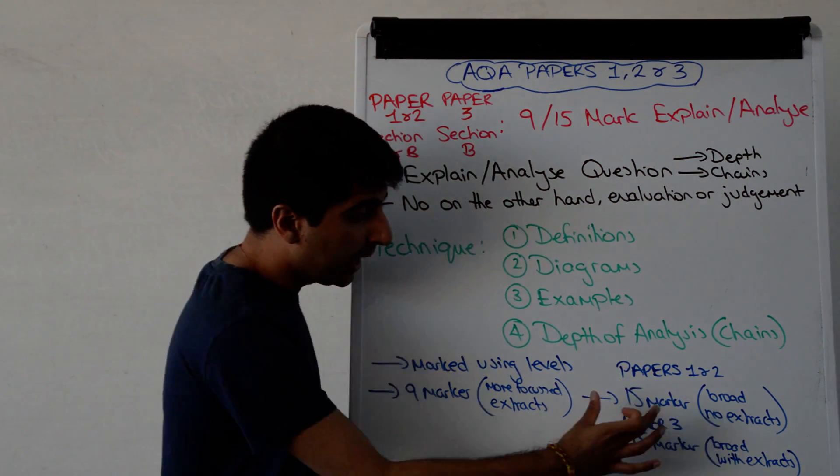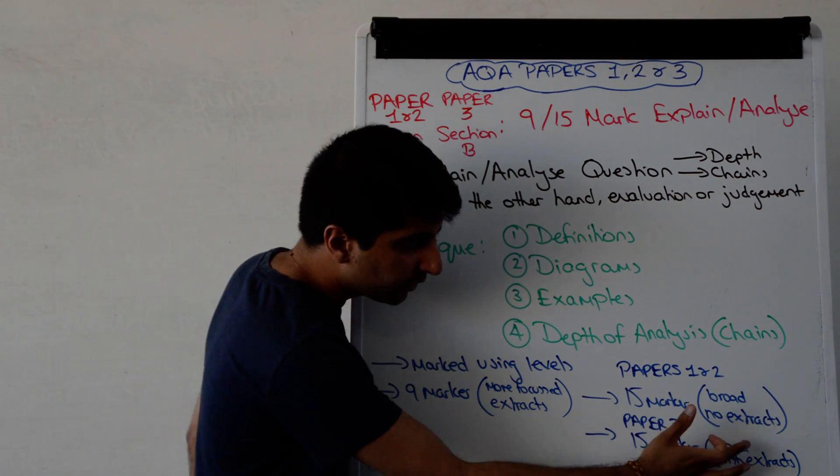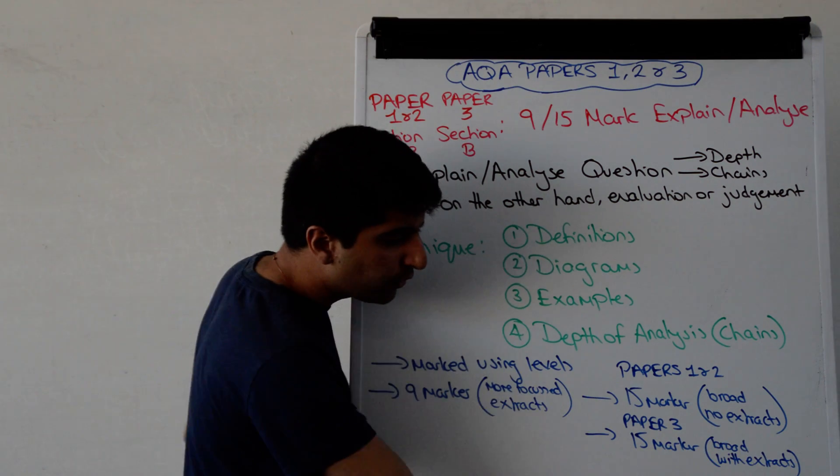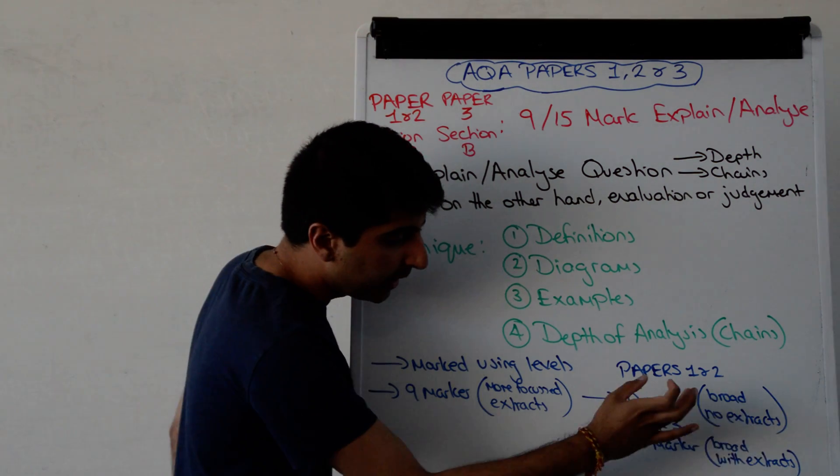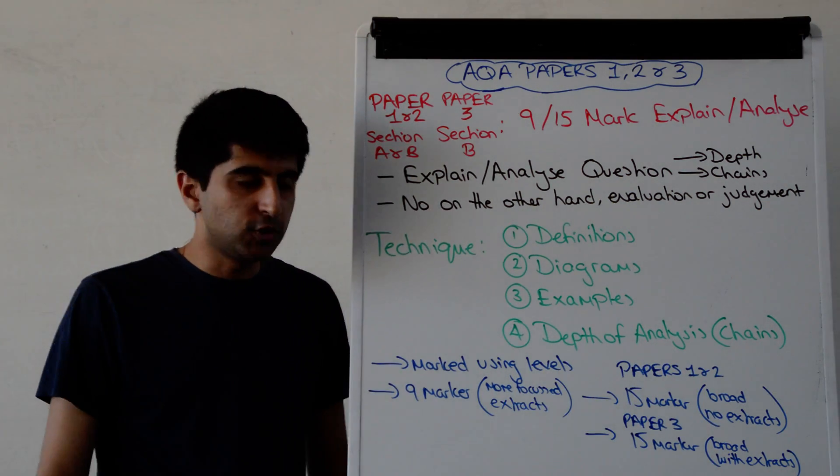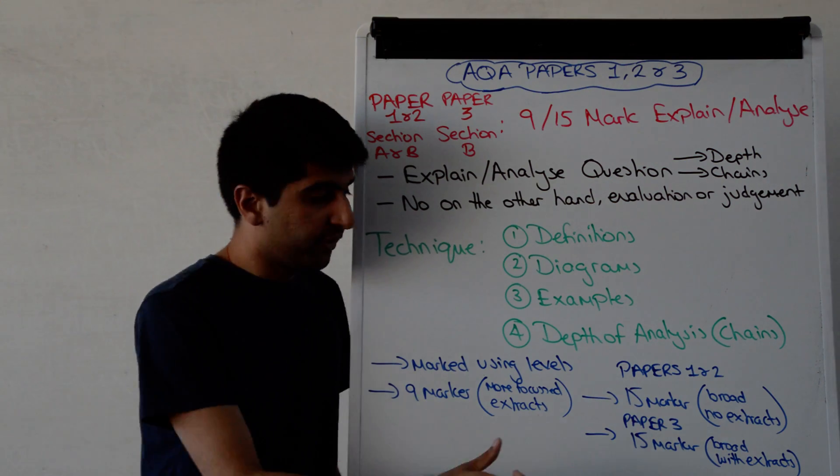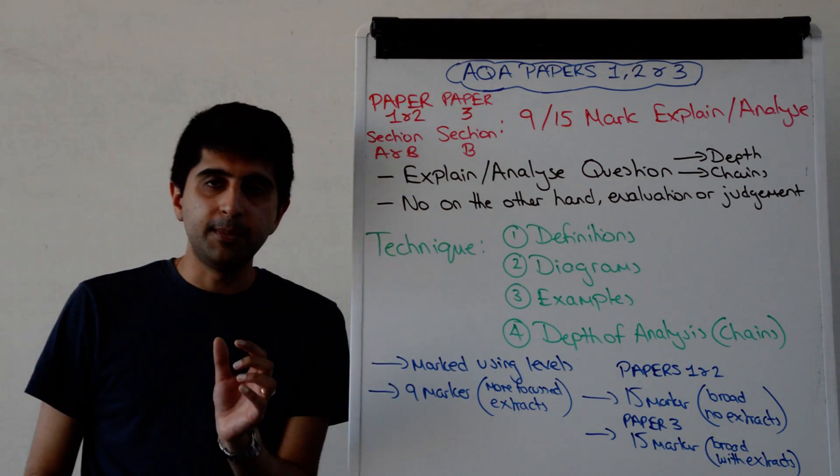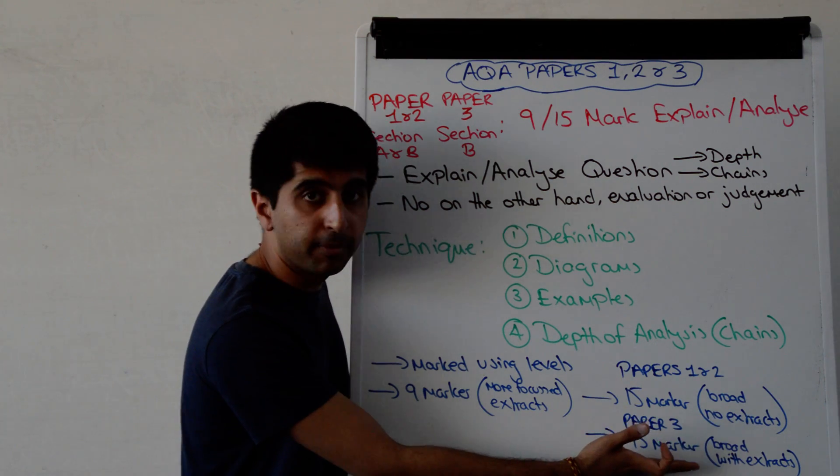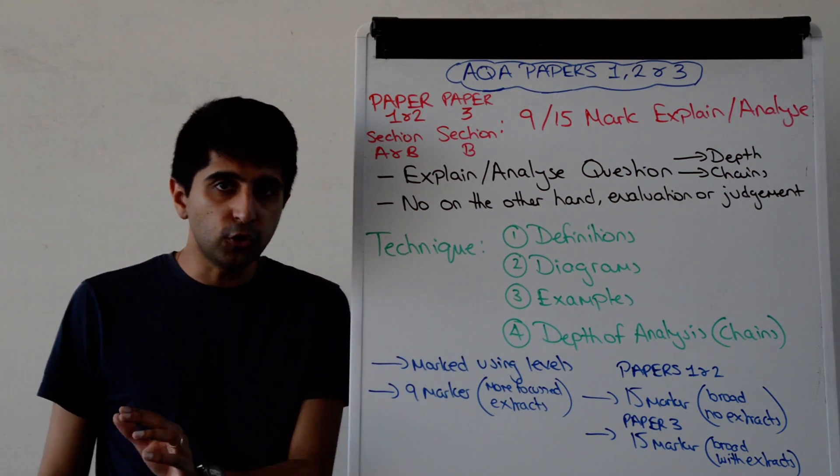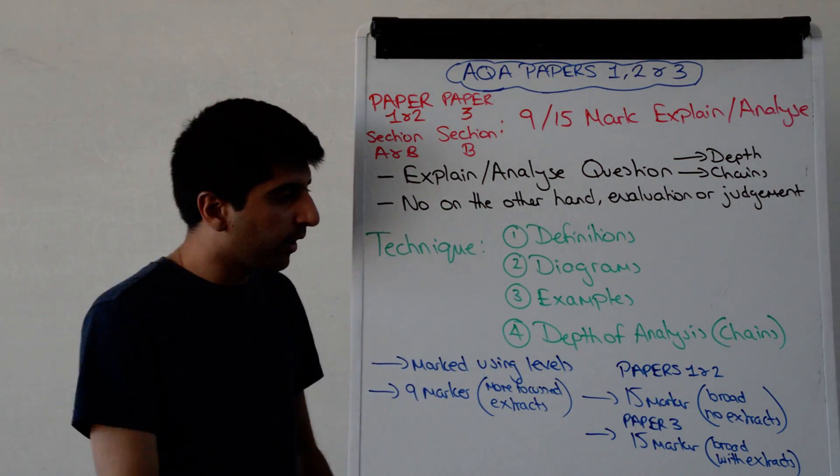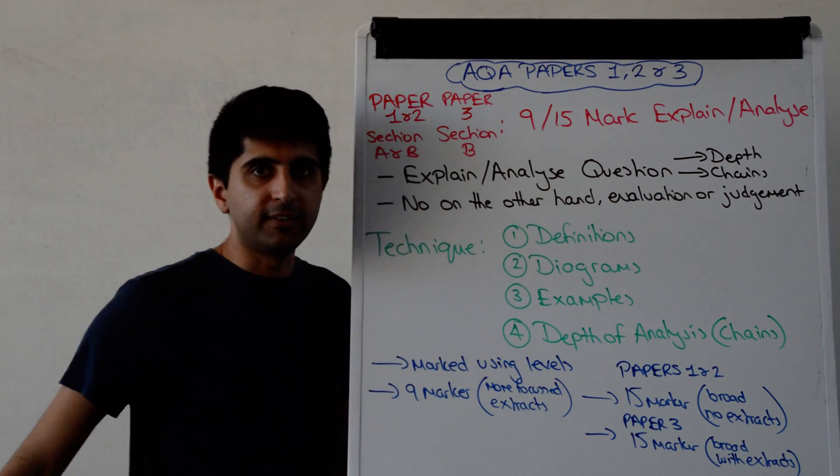In Paper 3, you've got extract material now to help you as well. So you've got loads of detail, just like you do in the 9 marker, to help you. But it's 15 marks, so it's going to be broad, just like the 15 marker in Paper 1 and Paper 2. But now the only difference is you've got extract material. The time is the same as here. You've got 20 minutes to do this. So there's no difference really with the 15 marker at all in Paper 3 compared to the 15 marker in Papers 1 and 2, except for the extract material to really help you with application. Otherwise, exactly the same technique, same time, 20 minutes each.